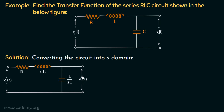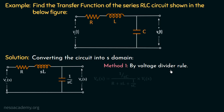So firstly, we will calculate the output voltage across the capacitor by using the voltage divider rule. This is Method 1. We have Vout equal to 1 over SC, which is the impedance of the capacitor, over R plus SL plus 1 over SC, which is the total impedance of the complete circuit, multiplied with Vi, which is the input voltage.